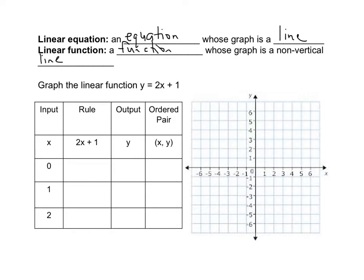So for example, if x is 0, we have 2 times 0, plus 1, would give us an output of 1, and our ordered pair would be 0, 1. So now you go ahead and pause the video and try the next 2 on your own.